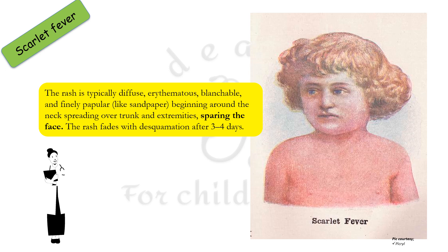In scarlet fever, the rash is typically diffuse — you cannot pinpoint a definite rash separately. It is erythematous, blanchable, and finely papular like sandpaper. It begins around the neck, spreads over the trunk and extremities, generally spares the face, and fades with desquamation after 3 to 4 days. Strawberry tongue is a very important finding in scarlet fever.